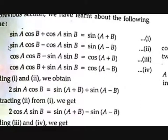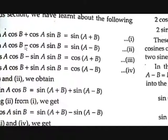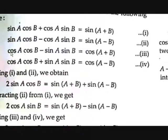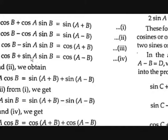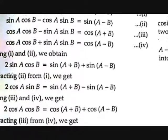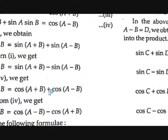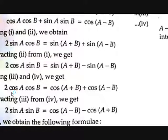Now, what if we subtract them? The sin A cos B terms cancel out, and you get 2 cos A sin B = sin(A+B) − sin(A−B). Also, by adding equations 3 and 4, we get 2 cos A cos B = cos(A+B) + cos(A−B). That's another new formula for cos A cos B.